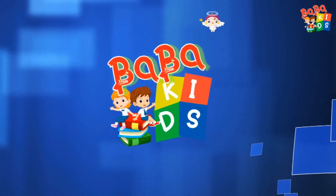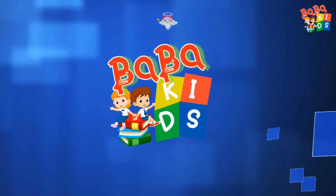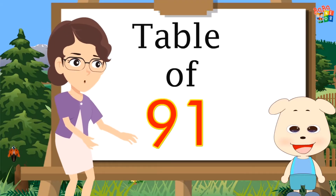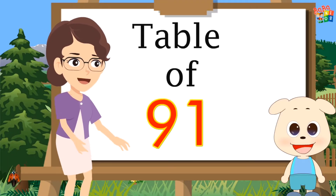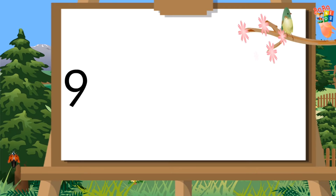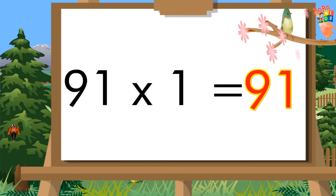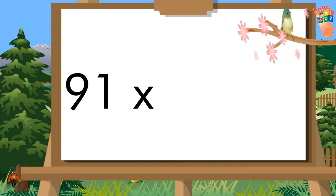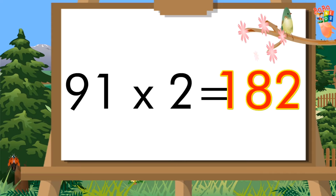Baba Kids. Table of Ninety-One. Ninety-one ones are ninety-one. Ninety-one twos are a hundred eighty-two.